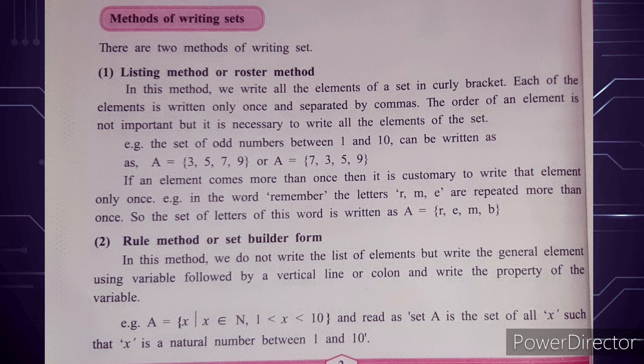For example, A = {x | x ∈ N, 1 < x < 10}. This is read as: 'Set A is the set of all x such that x is a natural number between 1 and 10.' The vertical line means 'such that,' and the belongs-to sign shows x is a natural number, with less-than and greater-than signs for the range.